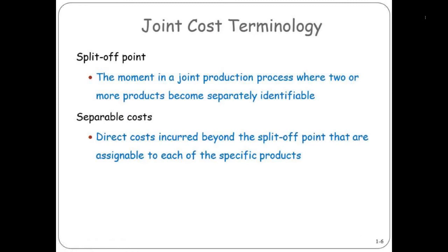The split-off point: during a joint production process, the split-off point is the point when you have recognizable different products coming out of the process. Separable costs are the costs that occur after the split-off point — you split off into your two or three main products, and then you have continuing processing on those products to take them to the end product that's ultimately being sold in the marketplace. That's a separable cost.